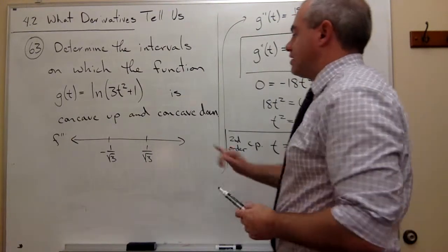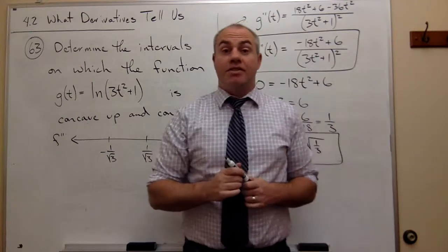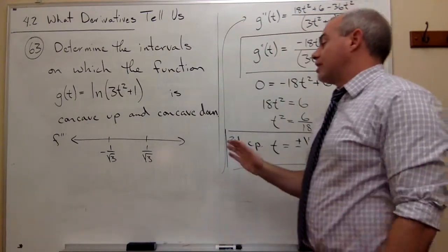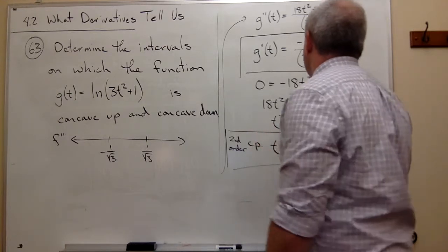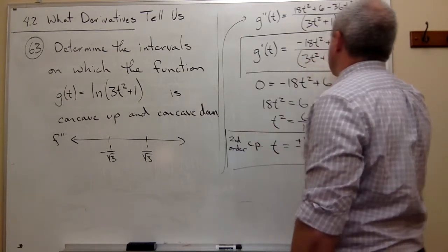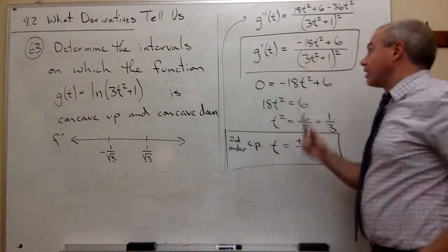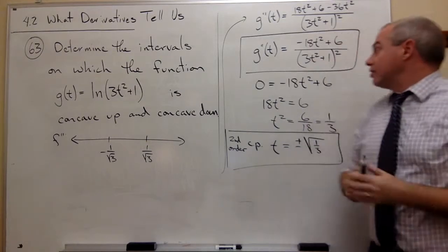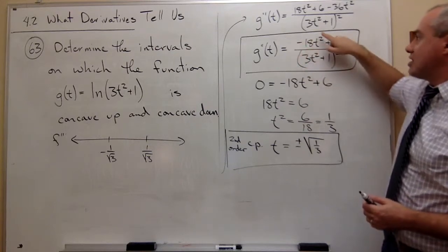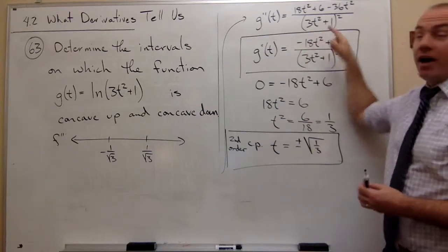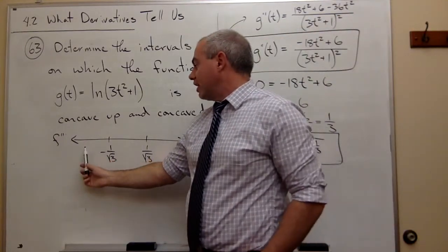Now we want to test some points into our second derivative to find out if these guys are positive or negative. Now, I can go through the whole process of plugging in, or I could just try to figure it out in my head. Look at the bottom of the second derivative. I just said this before, but it's worth noting. It's always positive. Right? There's no way that the bottom here is ever going to be negative. So I don't really need to worry about it. I just need to figure out, is the top positive or negative? And that will get the job done for me.